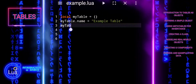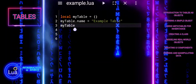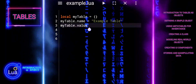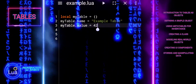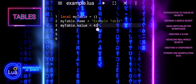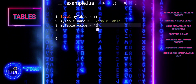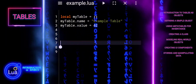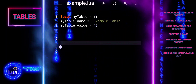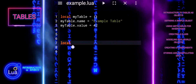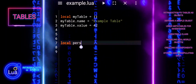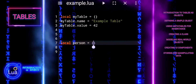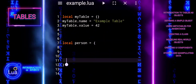Tables can hold various types of data, including numbers, strings, functions, and even other tables. This makes them versatile containers that can represent complex structures. Mechanisms such as meta-tables and meta-methods allow tables to behave like objects. By using these features, you can define custom behaviors for tables.